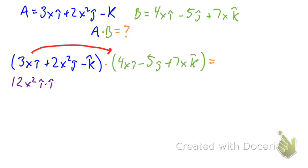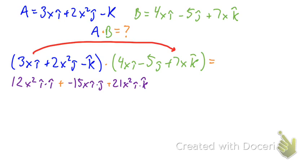Then we take the 3Xi times the second term and that gives me -15Xi·j, and then we take the 3Xi times the third term and we get 21X² i·k.